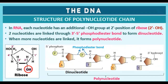Structure of the polynucleotide chain in DNA — here we have all the names of bonds shown in different colors because this is very important. In RNA, each nucleotide has an additional OH group at the second position of ribose. The two nucleotides are linked by 3' to 5' phosphodiester bonds — the phosphate of the fifth and third carbon respectively.